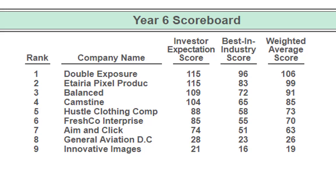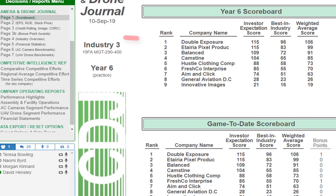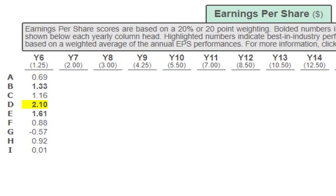Next, let's go to page two: earnings per share, return on equity, and stock price. On earnings per share, Company D jumps out — highlighted and bolded at $2.10 — as the leading team. Companies B and E are also bolded, meaning they've met investor expectations, so just because they're not number one may not be a big deal in the grand scheme of scoring. B is at $1.33, C at $1.16, E at $1.61. The concern would be Company G at negative $0.57 and Company I at $0.01, though Company A at $0.69 is not too bad.